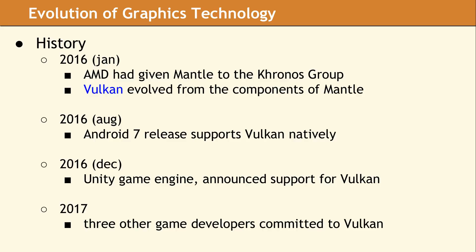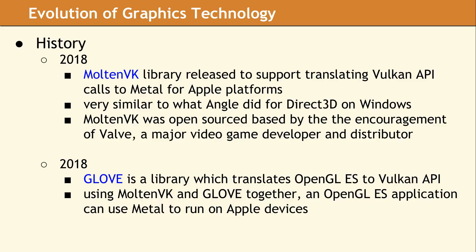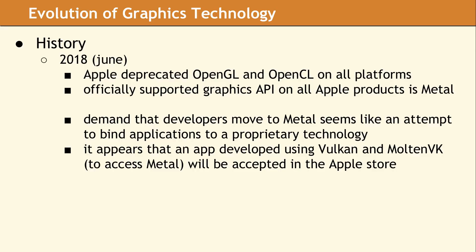The Khronos Group has grown considerably since then, and currently has over 120 members, all of whom collaborate to improve the open standard for graphics. The adoption of Vulkan continued to accelerate in 2018. The MoltenVK library was released to provide a compatibility layer to the Metal API, allowing a Vulkan application to run on Apple platforms with native performance and only minimal code changes. The Glove project is another translation library that converts an OpenGL ES application to run using the Vulkan API. Using the combination of MoltenVK and Glove, most legacy OpenGL applications can be adapted to access the Metal API to run natively on Apple devices.